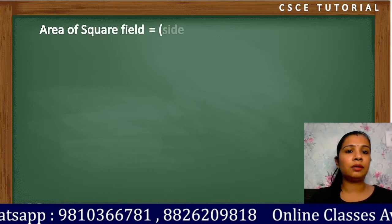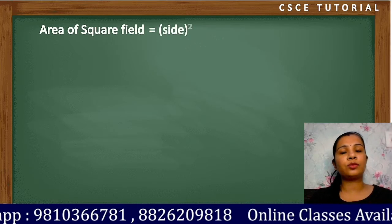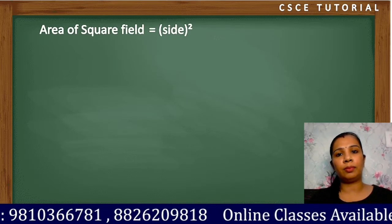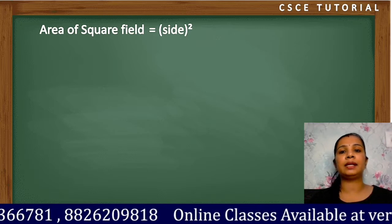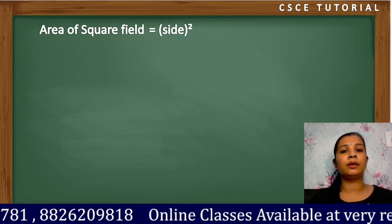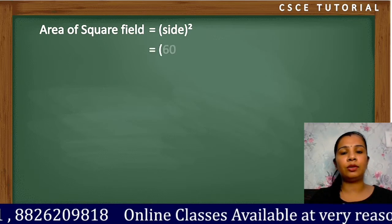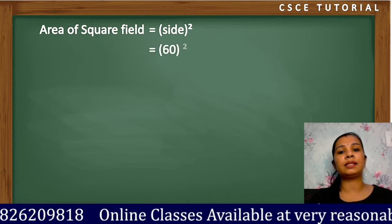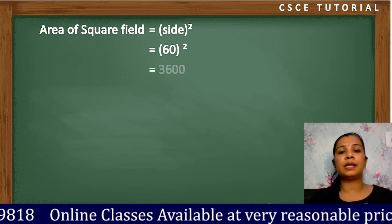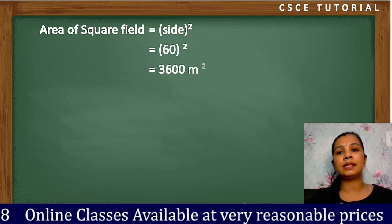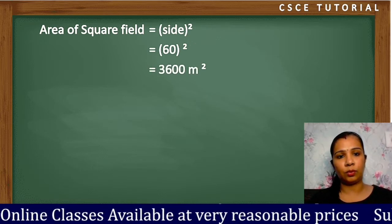Now we will find the area. The area of the square field uses the formula side × side, or side squared. Putting in the value, that is 60 squared, so the answer is 3600 square meters.